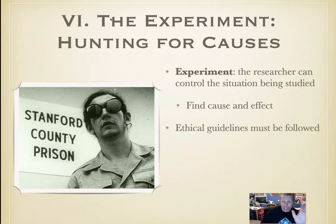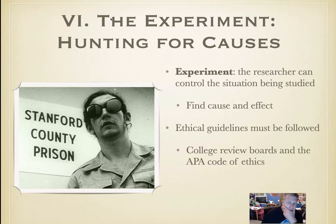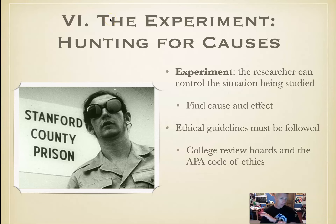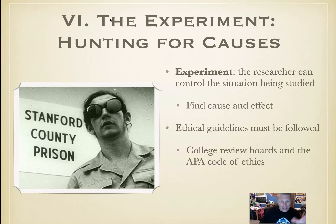There are ethical guidelines that must be followed — like in the previous video, the Goldberger study. That's not ethical. There are college review boards, APA codes of ethics, and IRBs — institutional review boards — that look at all potential studies to make sure they're okay. Some of the most notorious psychological studies, like the Stanford Prison study and Milgram's shocking study, gave psychology a bad name. So researchers have to make sure they're going to do no harm.